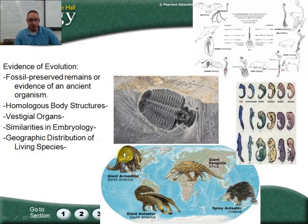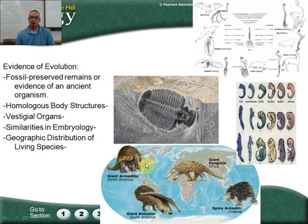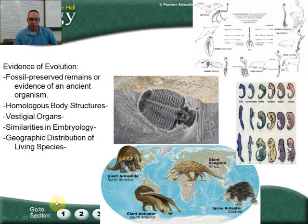The last evidence type is geographic distribution of living species. These animals all kind of look like anteaters — look at their snouts and how they function in their ecosystems. Geographic distribution of living species means that each creature adapts to a similar environment with similar characteristics. Most of these live in desert or temperate grassland environments and have similar characteristics because they live in similar ecosystems.